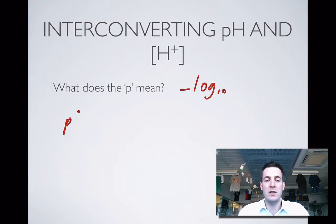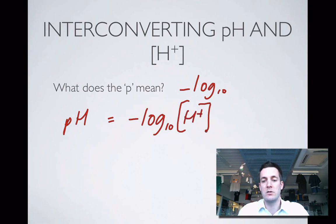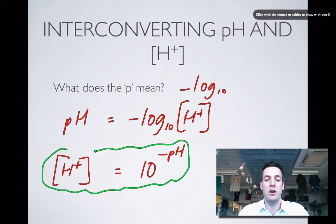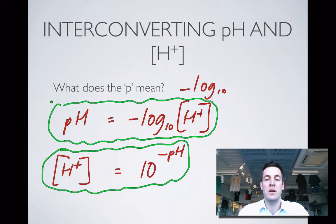So if I want to find the pH of a solution, I take minus log of the H plus ion concentration. Similarly, if I want to find the H plus ion concentration, I take 10 and raise it to the power minus pH. I don't need to figure out why these relations are the way they are—I just need to be able to plug numbers into my calculator. I'm just going to highlight the two formulas we need to use.